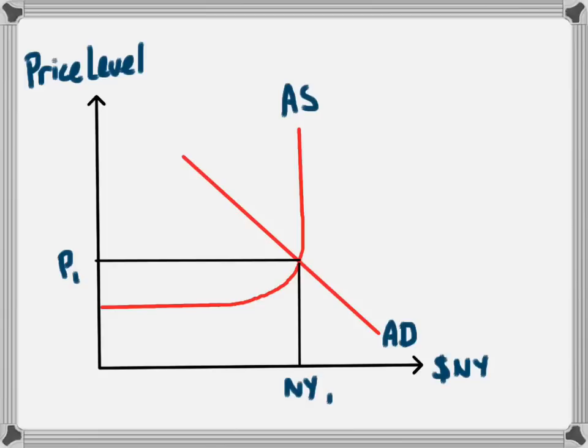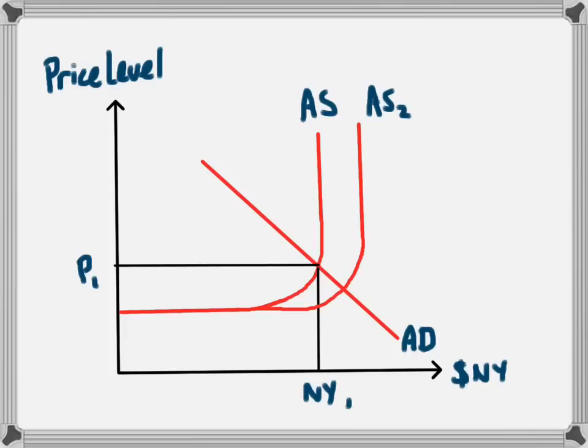This is seen as a shifting out of the aggregate supply curve from AS to AS2. So we have the aggregate supply curve shifting in this direction. So now, the economy can produce a greater level of output with the same level of inputs.